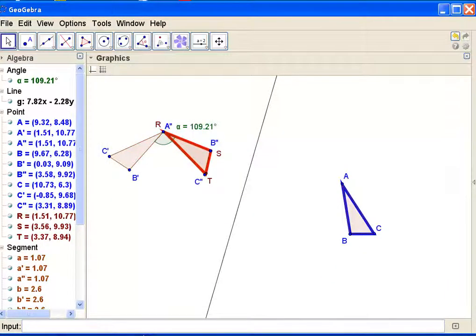Now I have completed the sequence. A double prime, B double prime, C double prime matches up with triangle R, S, T. Have a great day.